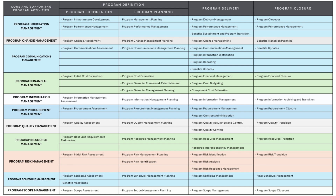Program scope management ensures that the program's objectives are clearly defined and adhered to. Program scope assessment evaluates the overall scope of the program and its components. Program scope management planning develops a plan to define, monitor, and control the program's scope throughout the life cycle. During delivery, scope is managed and any changes are evaluated and integrated properly. At closure, the final scope is confirmed and all deliverables are completed according to the defined objectives.